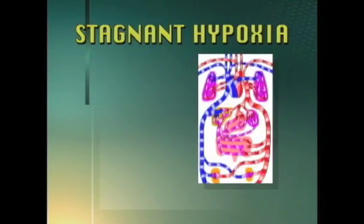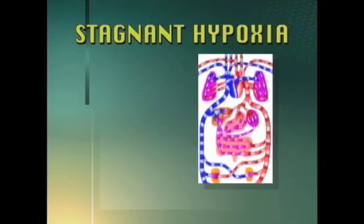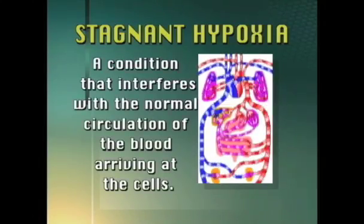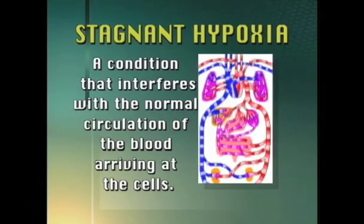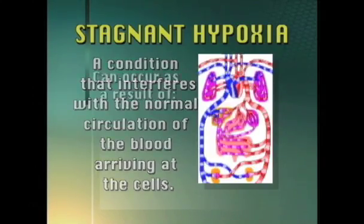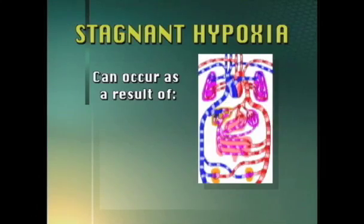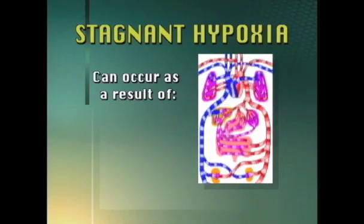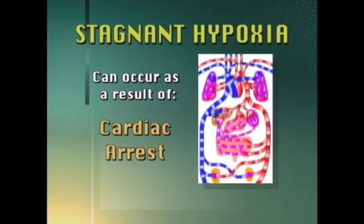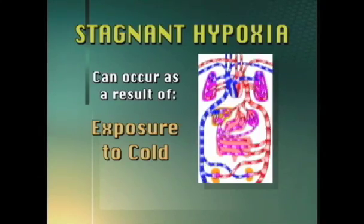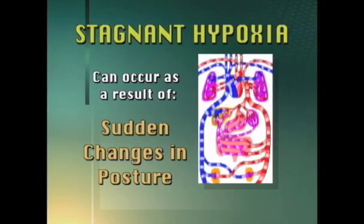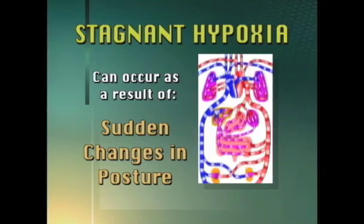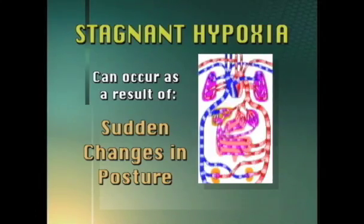Stagnant hypoxia occurs at the circulatory level. It is defined as a condition that interferes with the normal circulation of the blood arriving at the cells. Stagnant hypoxia can occur as a result of cardiac arrest, shock, exposure to cold, and sudden changes in posture, such as standing up after a prolonged rest.